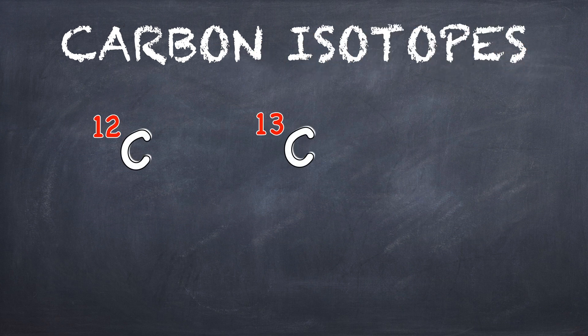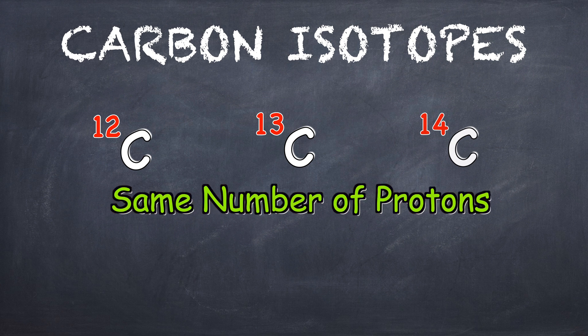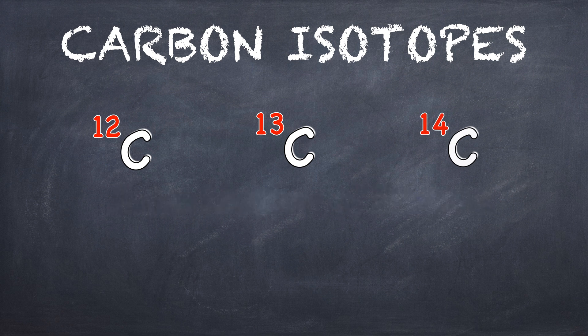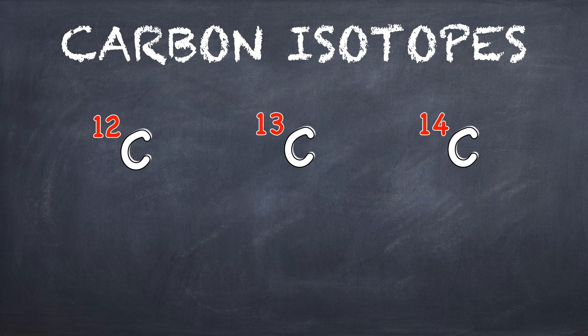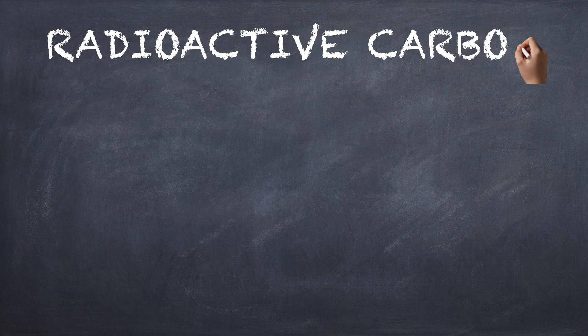Carbon has three isotopes: carbon-12, carbon-13, and carbon-14. Isotopes have the same number of protons but different number of neutrons. Carbon-12 is most abundant in nature. Both carbon-12 and carbon-13 are stable.